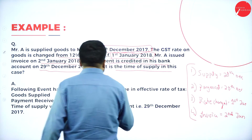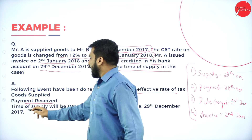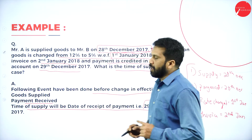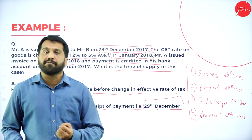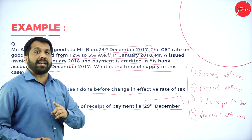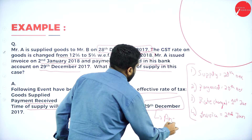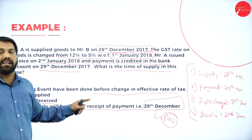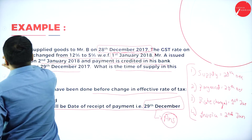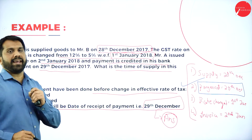Following events have been done before the effective rate of tax changed: goods supplied and payment received. Time of supply will be the date of receipt of payment, that is 29th December. Even though the rate changed on January 1st, the payment was already made before that. So the time of supply is 29th December.